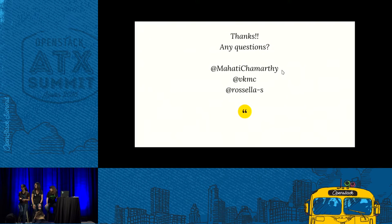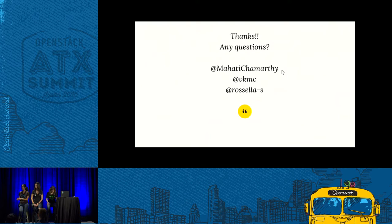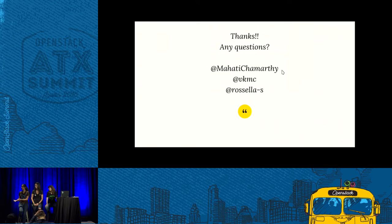Another metric could be as simple as: did they make progress on what they're doing? If they're trying to fix a bug or write a feature and they've made progress — moved from one step to the other — that's also a success.